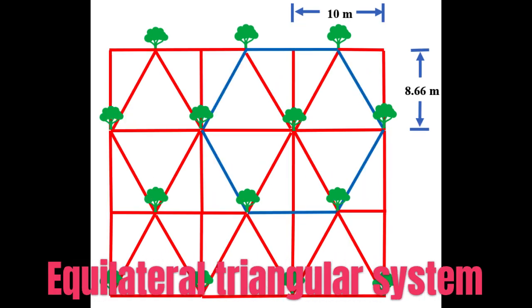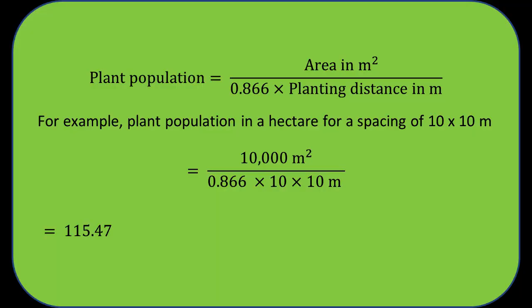In the equilateral triangular system, the area is divided into equilateral triangular grids and crops are planted at all the corners of equilateral triangles. The row-to-row distance is calculated by multiplying 0.866 with the plant-to-plant distance. As the planting of trees also forms the shape of a hexagon with crops in the center, it is also known as the hexagonal system or septuple. The plant population in this system is 15% more than the square system, and is calculated by dividing the area by the product of 0.866 and the planting distance.